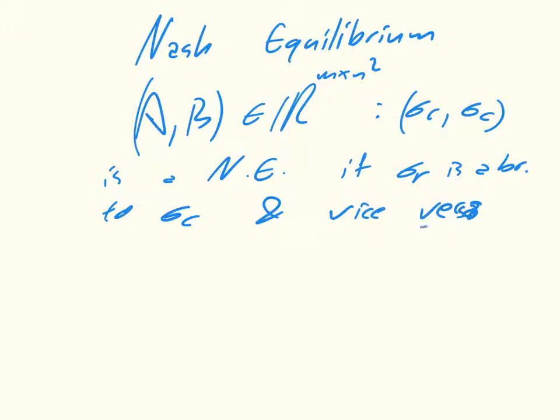And so the important concept in what a Nash Equilibrium is, is that if both players are playing sigma R, sigma C, then neither player has a reason to move. So if we consider the matching pennies game...